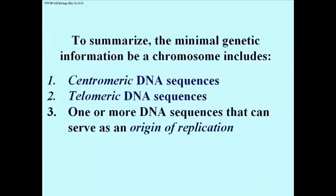So to summarize, the conclusion from this experiment is that the minimal genetic information required to make a chromosome is that this structure has centromeric DNA sequences, telomeric DNA sequences, and at least one origin of replication.